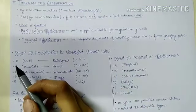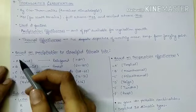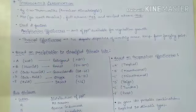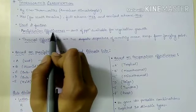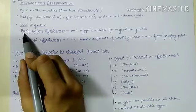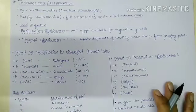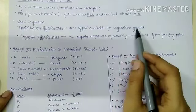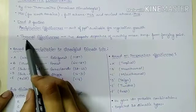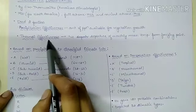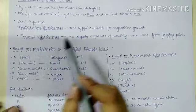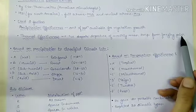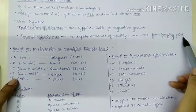For delimiting the boundaries of different climatic regions, Thornthwaite used two factors: precipitation effectiveness and thermal effectiveness. Precipitation effectiveness, or precipitation efficiency, is the amount of total precipitation available for vegetation growth. Thermal effectiveness is based on the idea that the positive departure of monthly mean temperature from the freezing point is also important for vegetation growth in an area.